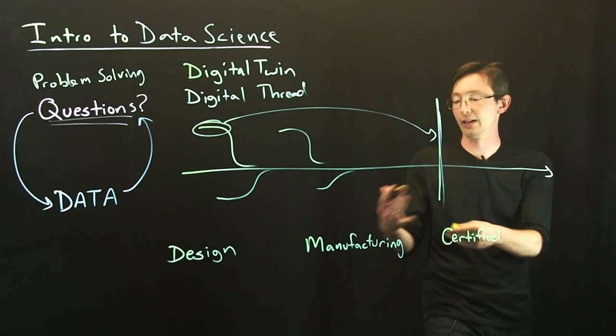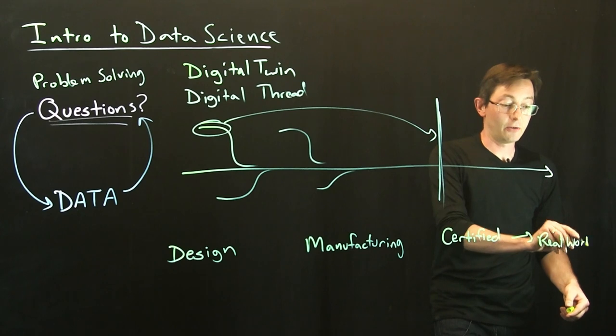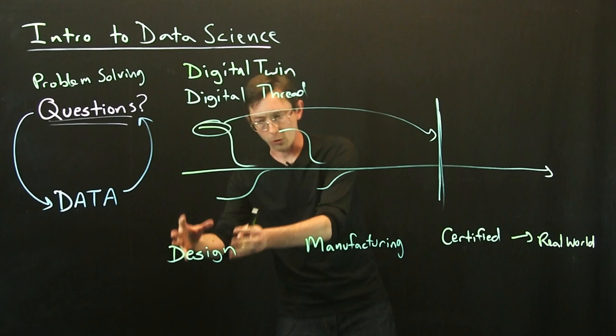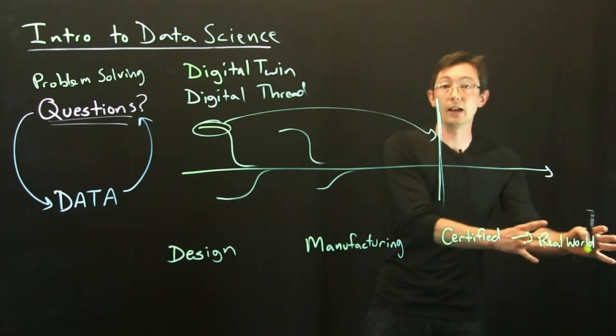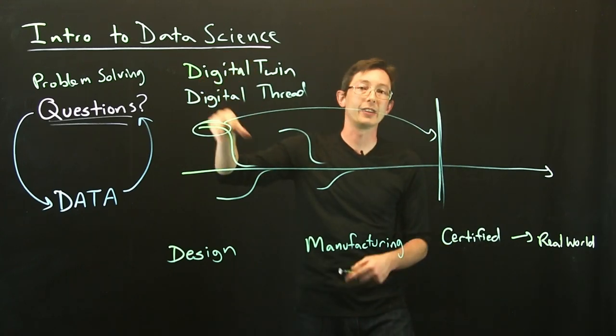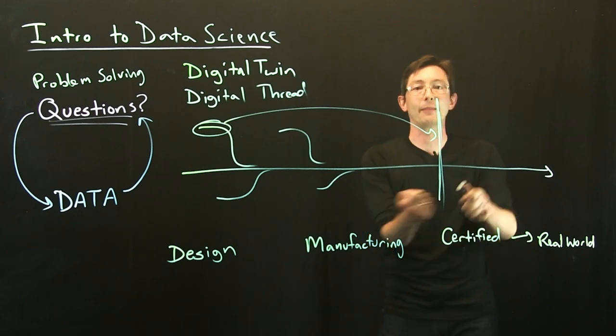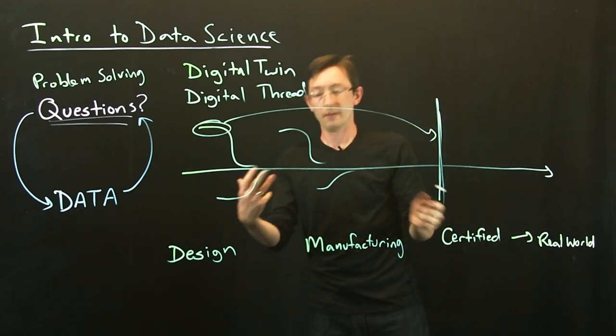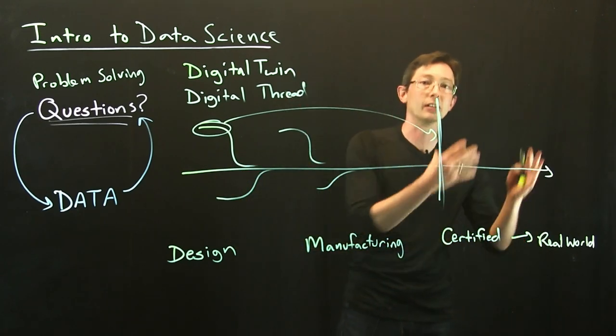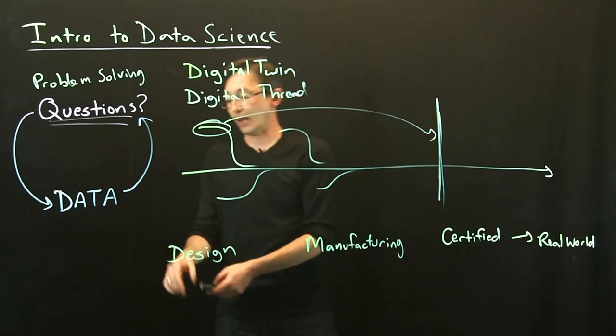Of course these are not all done in isolation today, but what the digital twin and digital thread will hopefully allow in the future is having much tighter feedback between these different core aspects of design and manufacturing, certification, and then tying that to real-world performance, maintenance, things like that. And maybe even in the design phase—what's the business model? Who are you going to sell these products to? What needs does it fill?